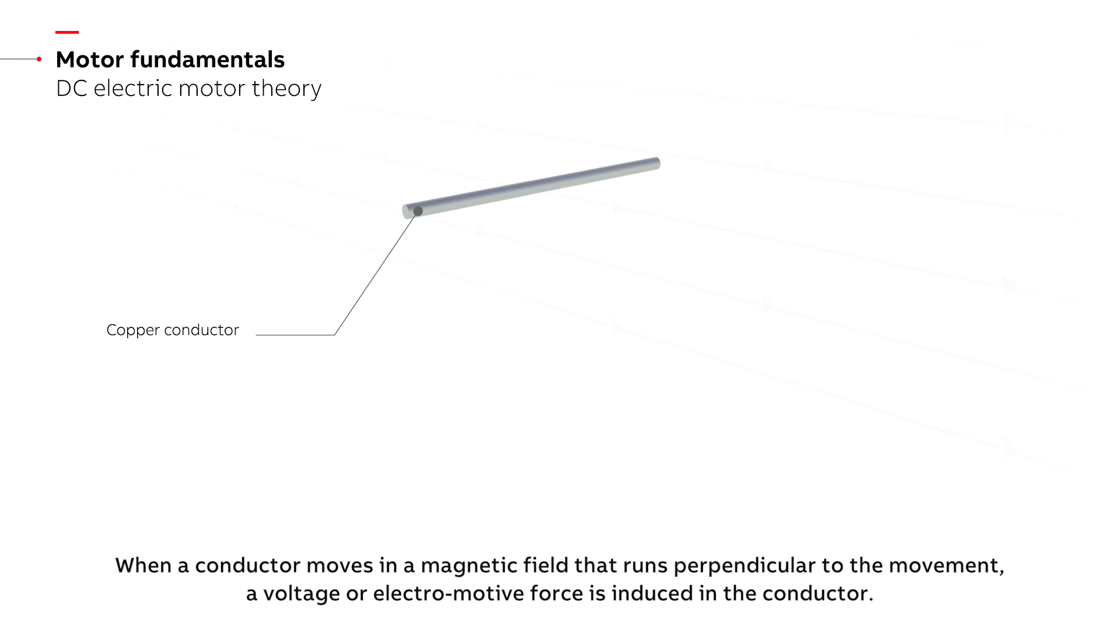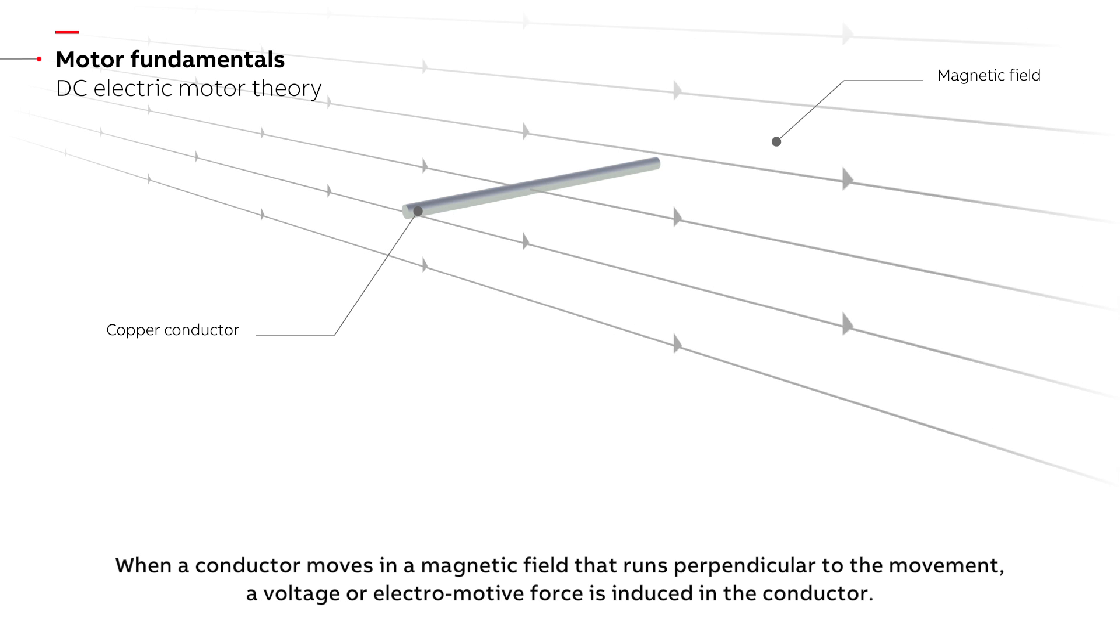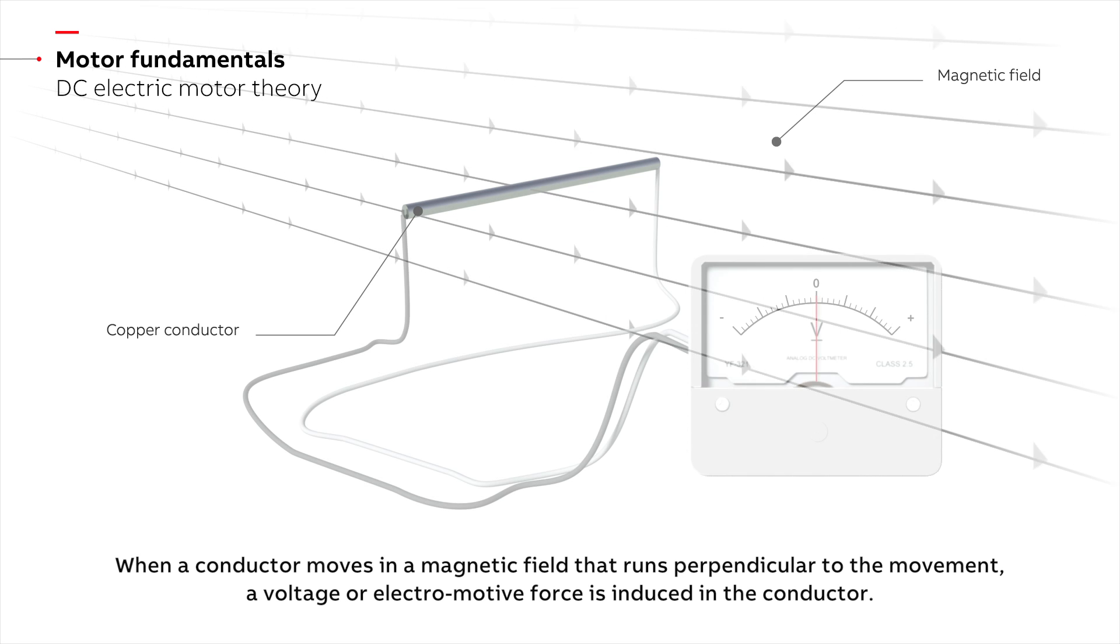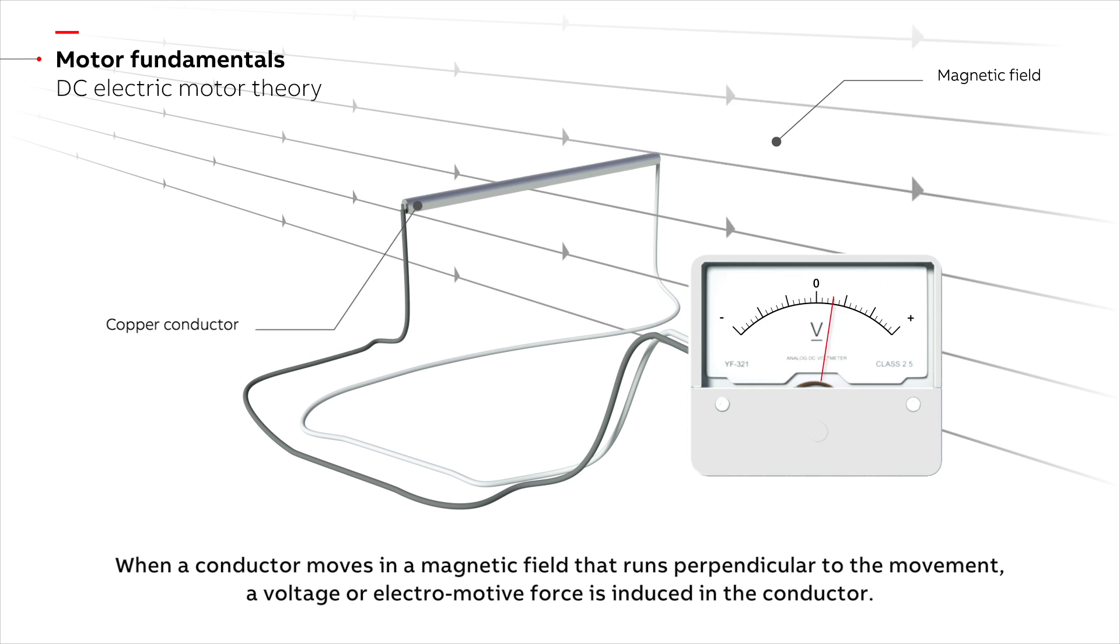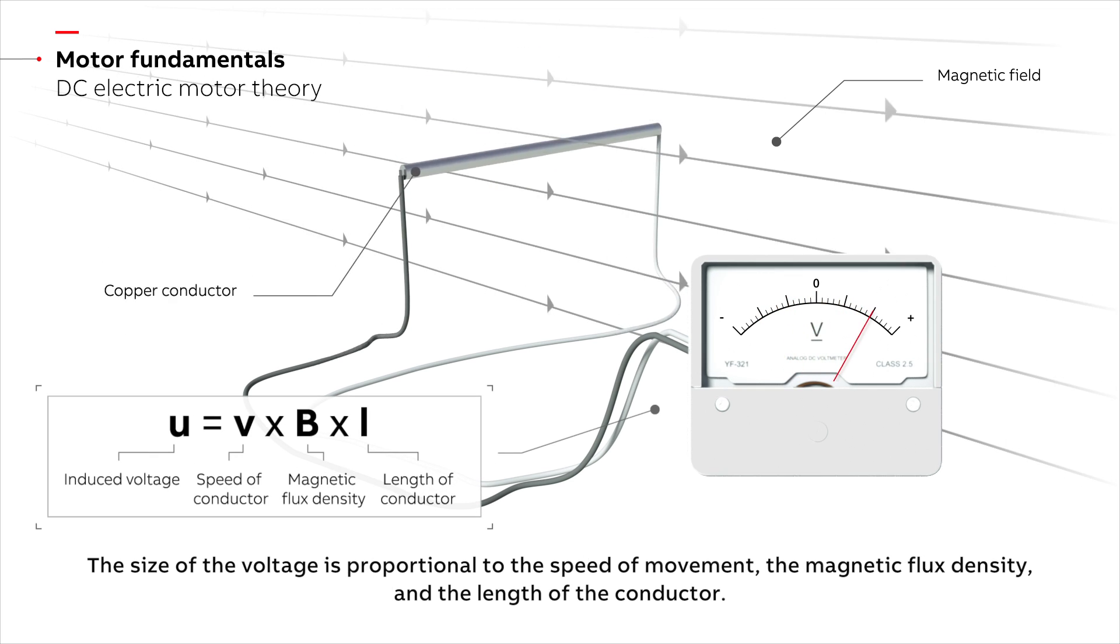When a conductor moves in a magnetic field that runs perpendicular to the movement, a voltage or electromotive force is induced in the conductor. The size of the voltage is proportional to the speed of movement, the magnetic flux density and the length of the conductor.